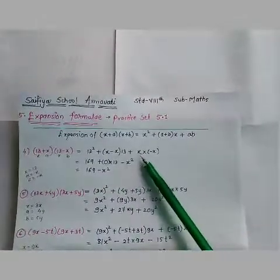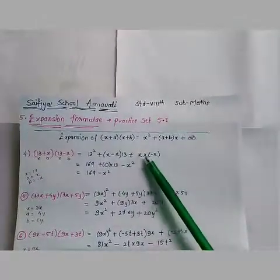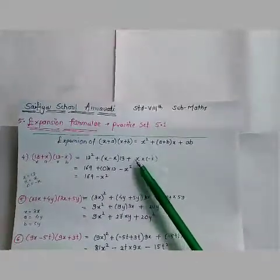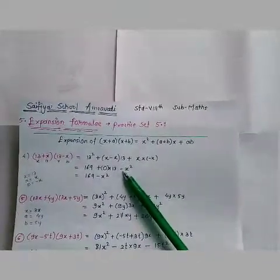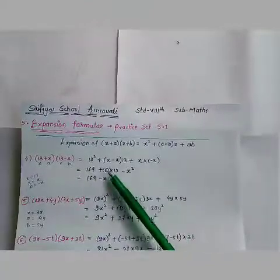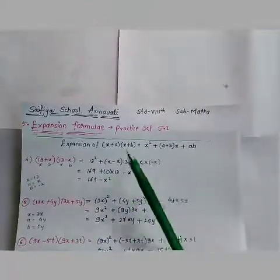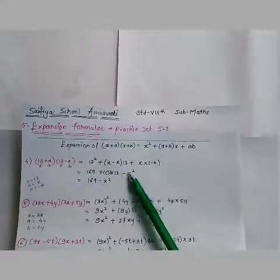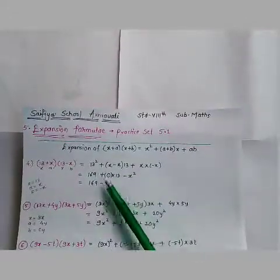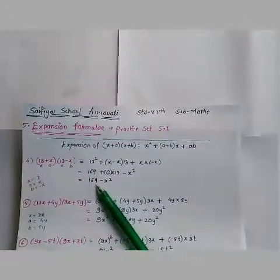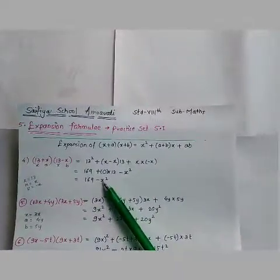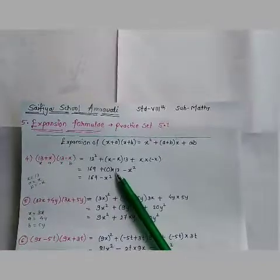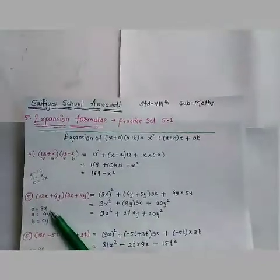Then for a into b: the sign was plus here, so x into minus x is minus x². So our remaining answer is 169 + 0 - x². We will write 169 - x². Writing 0 is not necessary. Now let us solve the next question, that is the 5th question.